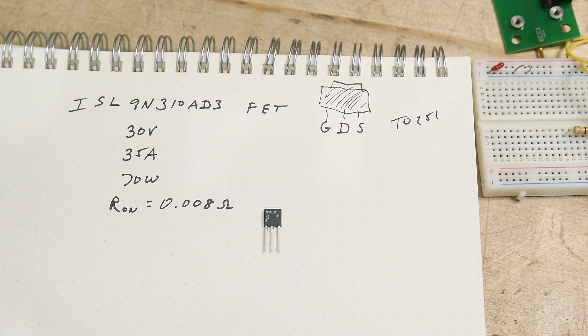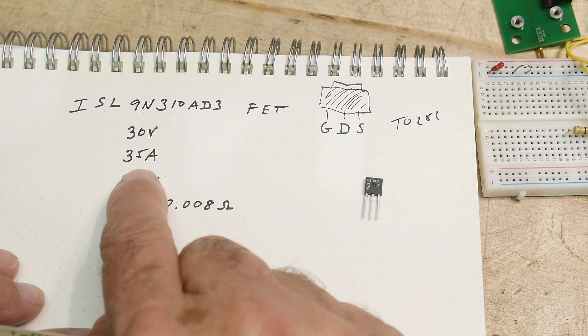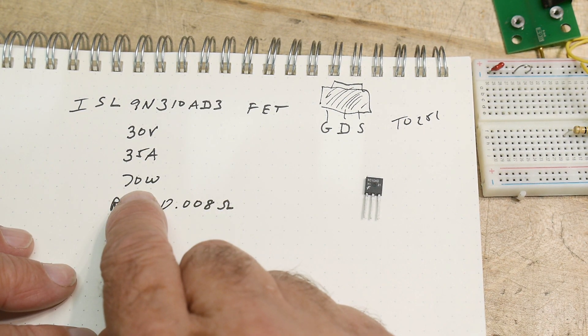And so let's talk about the specs here. It's a 30 volt part, 35 amps, and 70 watts.